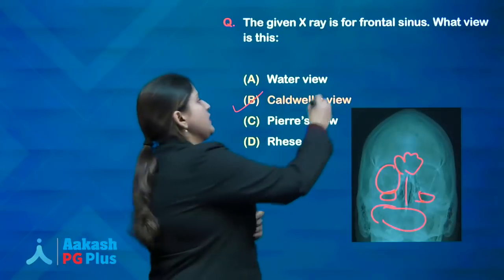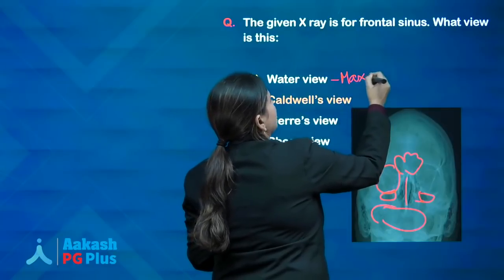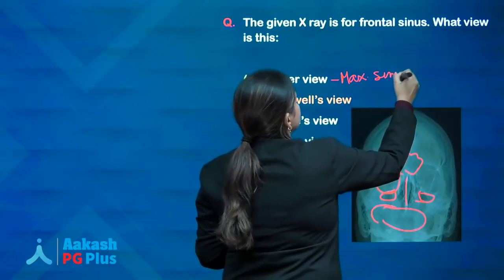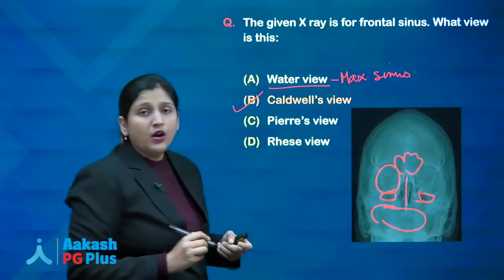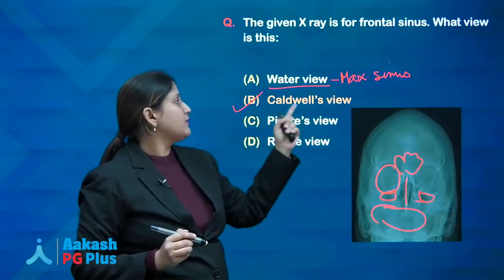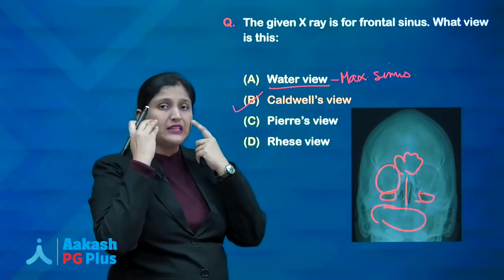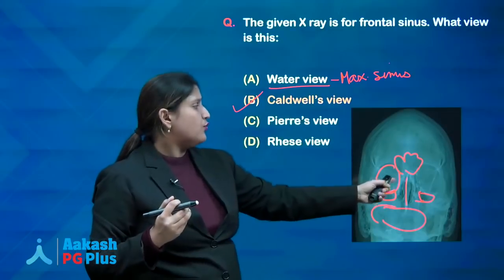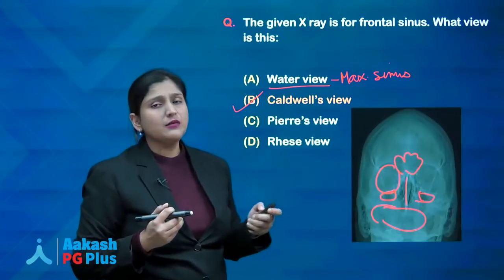If the view is given for the maxillary sinus, then the answer is Water's view. Water's view is the occipitomeatal view, done to visualize the maxillary sinus. Caldwell's view gives the best visualization of the frontal sinus.